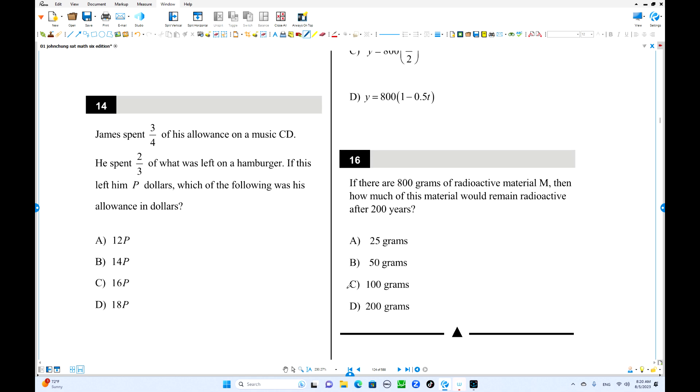Number 14, James spent 3 over 4 of his allowance here and another 2 thirds of what's left. Finally he got p dollars left. Which is the value of his allowance? Maybe you can use algebra. 3 over 4x out, 1 fourth of x is left, but he spent 2 over 3, that is how much? 2 out of 12, 1 over 6x. He spent this amount, how much is left?